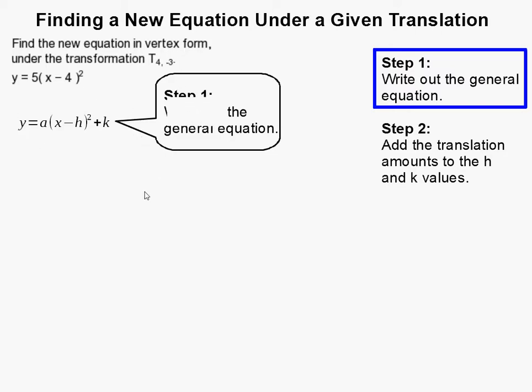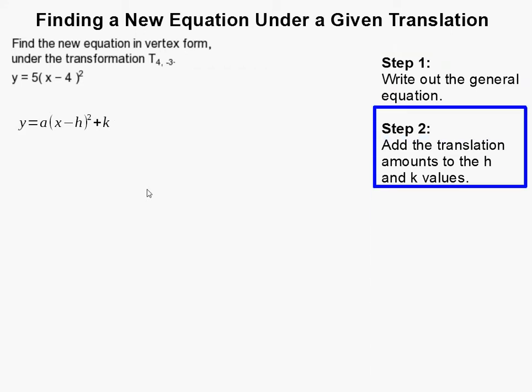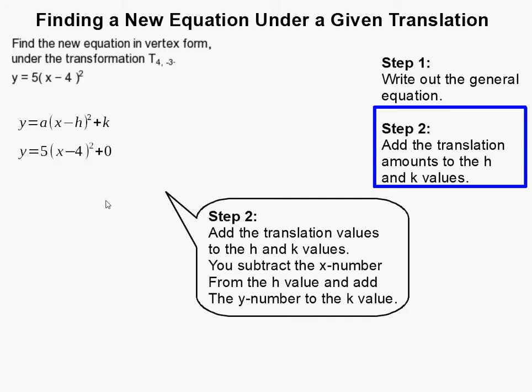Then what I did next was I rewrote the equation that was given, but I put it in this form. This 5 is substituted for the a, 4 is the h, the 0 is k. See how there's nothing here? For some people they like to put the plus zero to help them visualize, oh that's where the k goes. You don't have to, but it helps a lot of people.